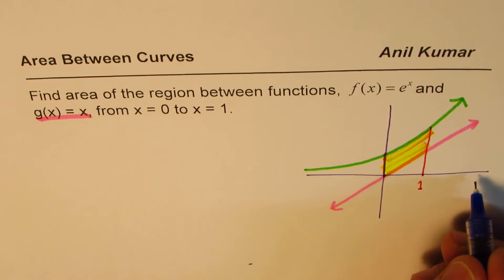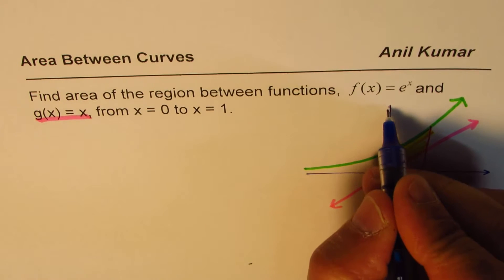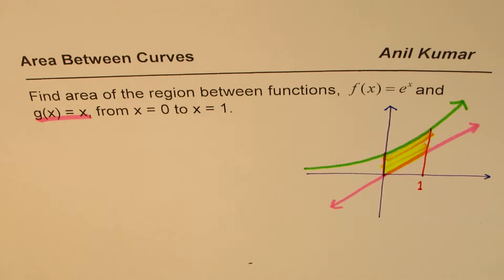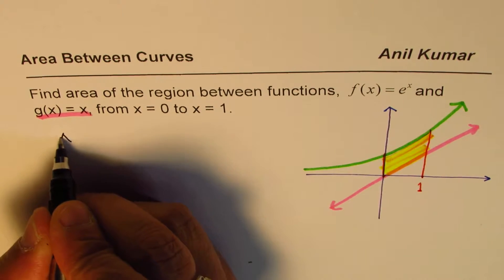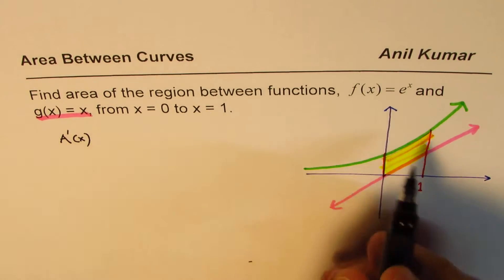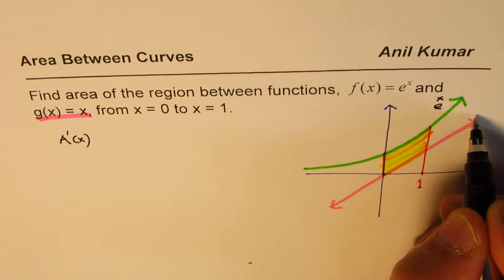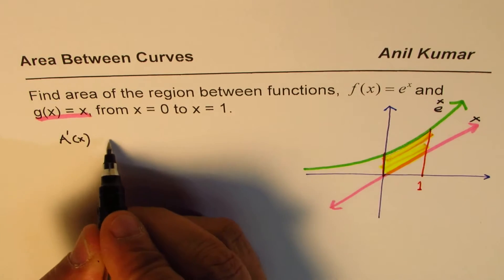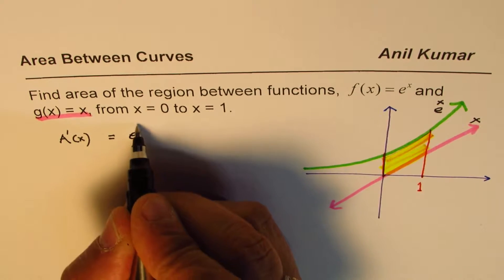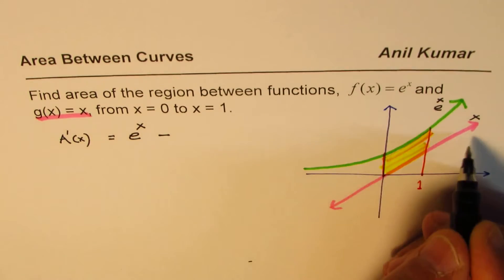Now this is all positive region. So we can straight away write that the area function, the derivative of area function should be equals to difference of these two functions. This is e to the power of x, and this is y equals x. So it is actually e to the power of x minus x.